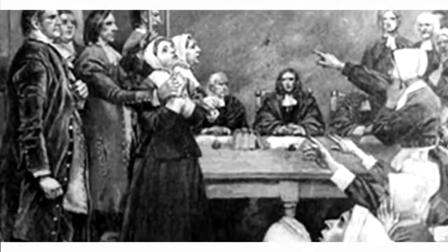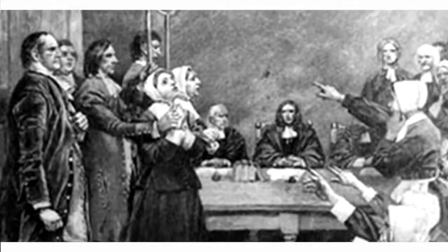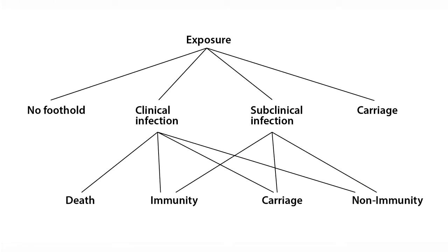Let's go back to the terminology we started talking about. If one is exposed to an infectious agent, a number of possibilities could occur: nothing, clinical infection, subclinical infection, or the person could carry the organism but not be sick. For clinical infection, death might occur, or immunity — an individual recovering from the disease might be immune — or they might carry it, or be non-immune. For subclinical infection, of course, there wouldn't be death, but immunity, carriage, and non-immunity might also occur.